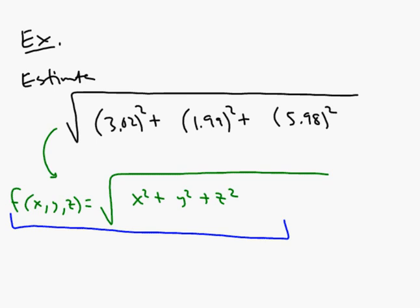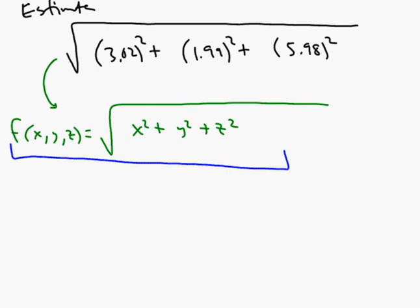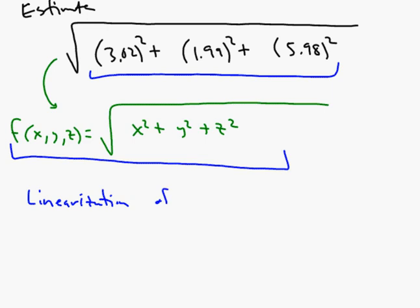To estimate the expression, we use the linearization near a convenient point. We'll find the linearization of f of x comma y comma z at the point 3 comma 2 comma 6 — chosen because those are nice integer values very close to 3.02, 1.99, and 5.98, respectively.